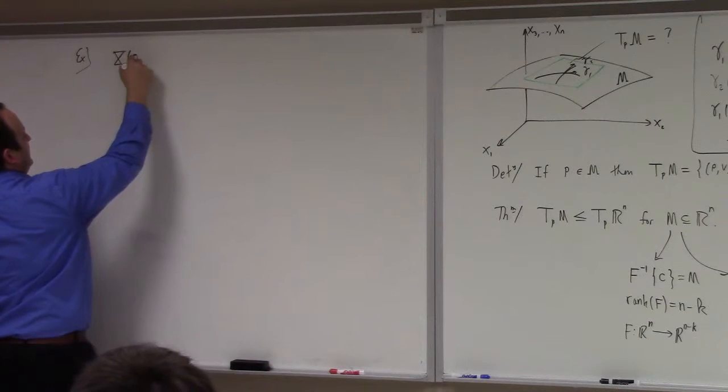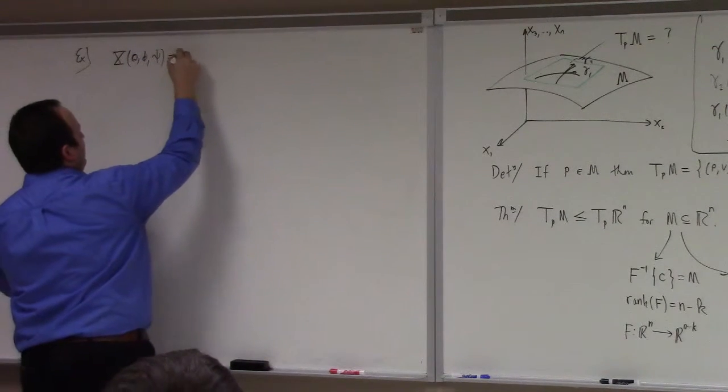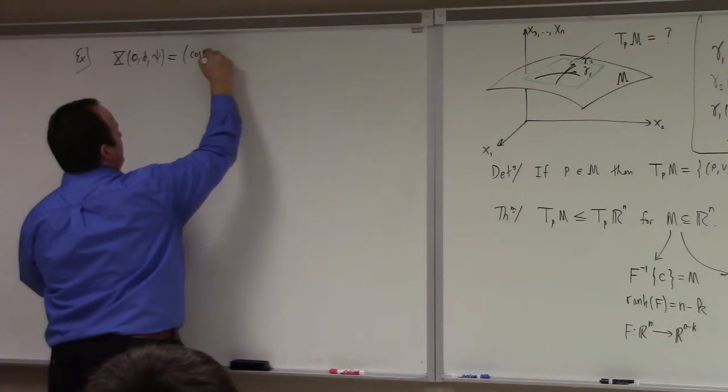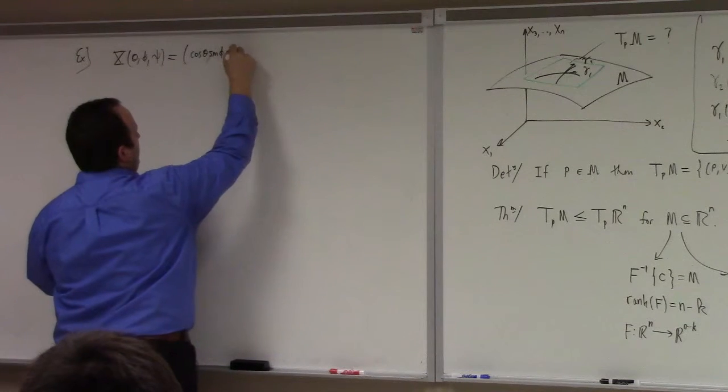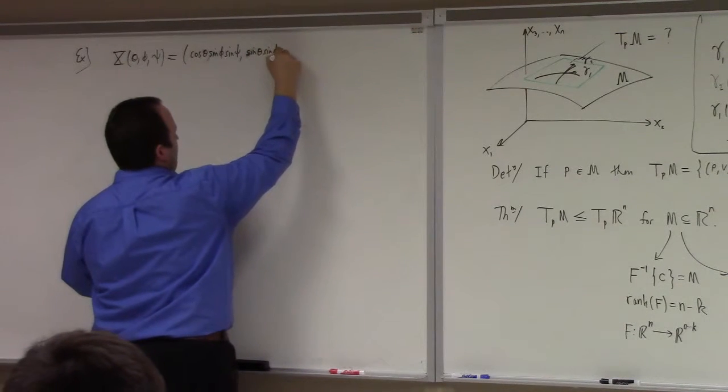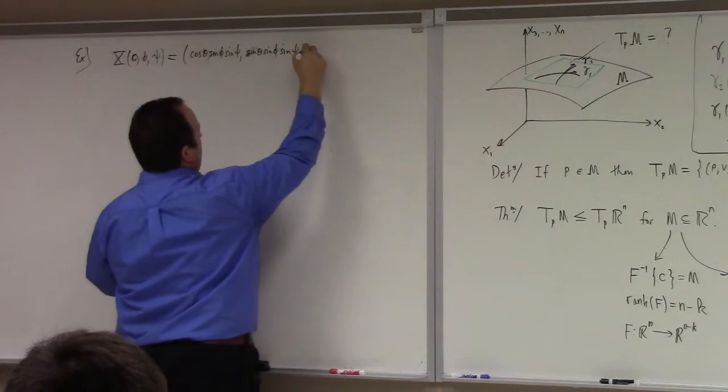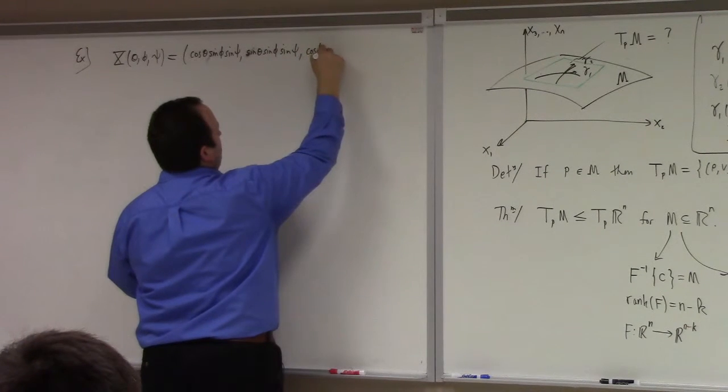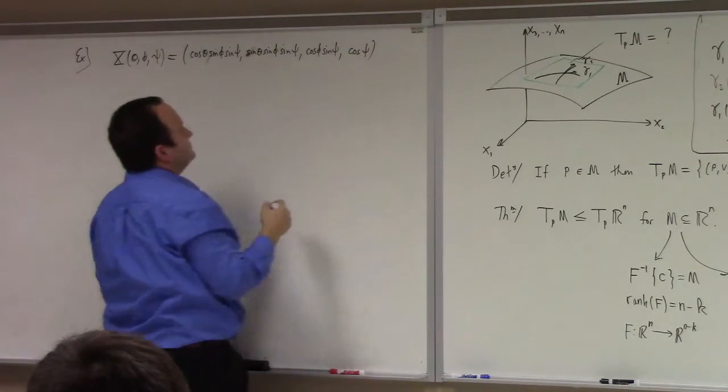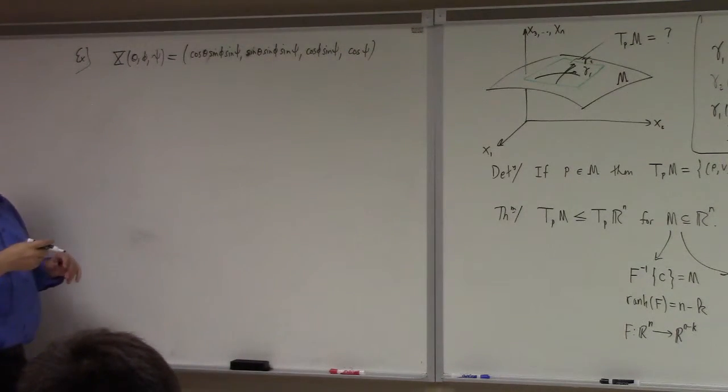What were the variables? It was theta phi pitchfork. And we had cosine theta sine phi sine pitchfork, sine theta sine phi sine pitchfork, and then cosine phi sine pitchfork. Sine theta sine pitchfork. It's four-dimensional.